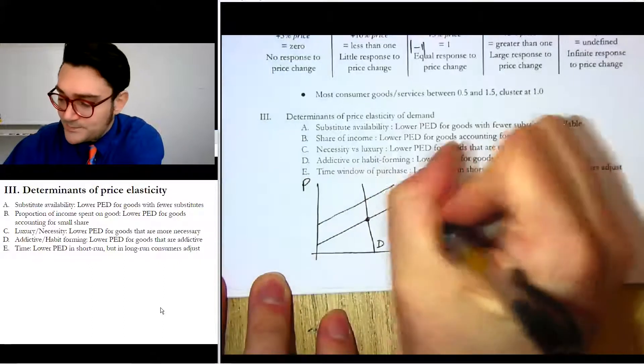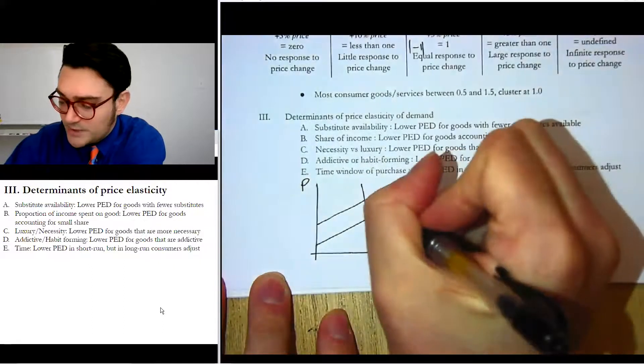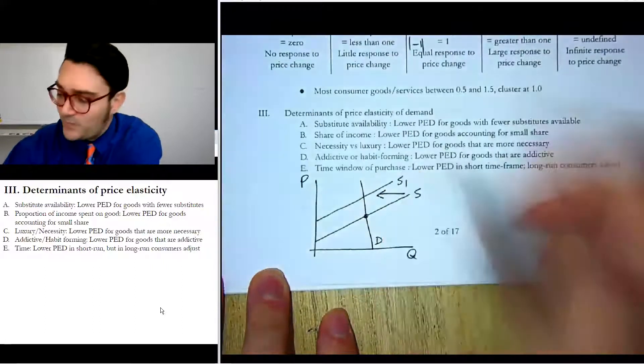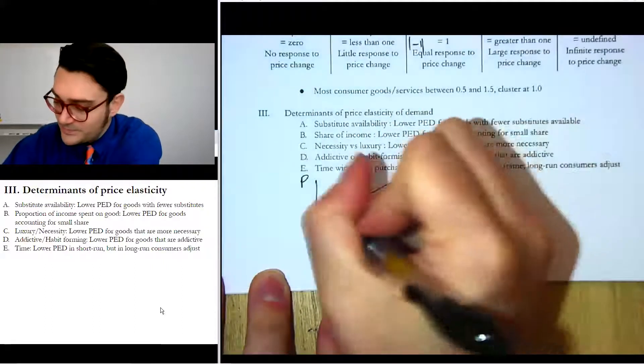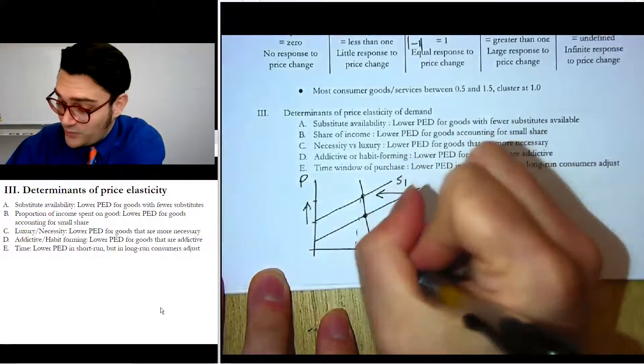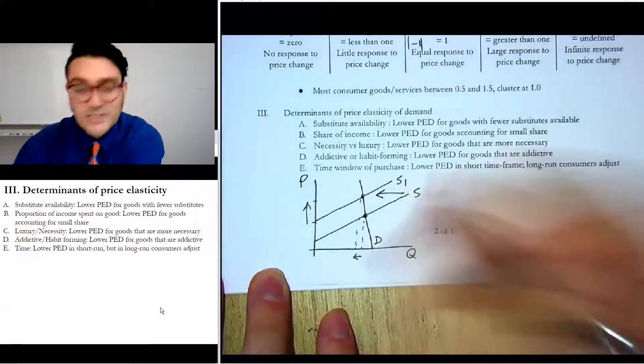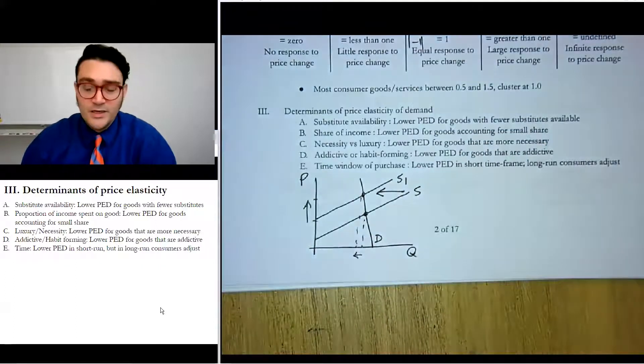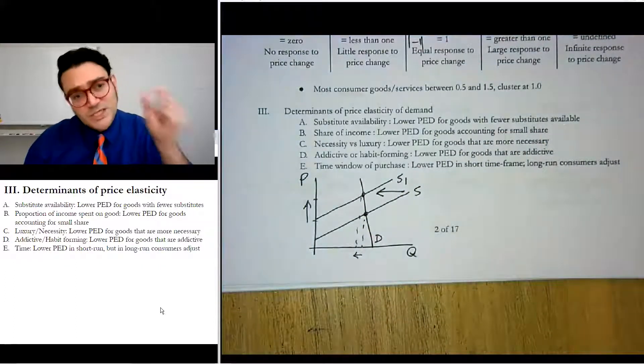So you cut the supply. We have a pretty substantial decrease in the supply. Well, what happened? The price went up. But what happened to the quantity? Decreased only a tiny amount. It didn't work. So it's not going to work to just focus on that.